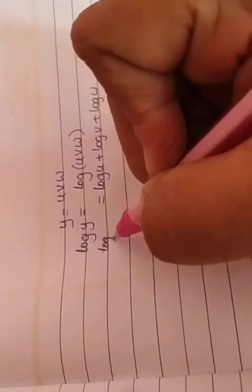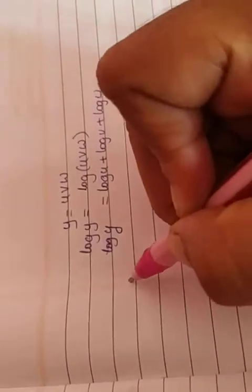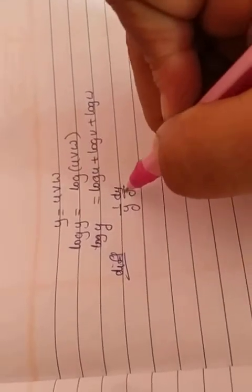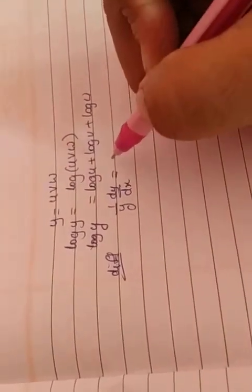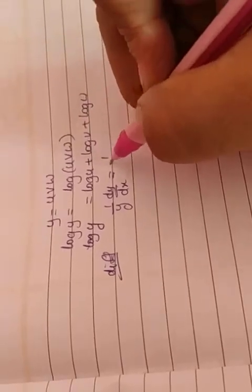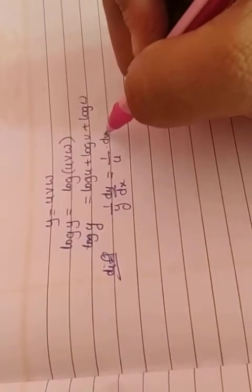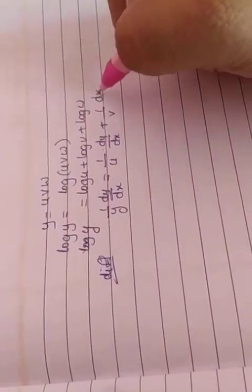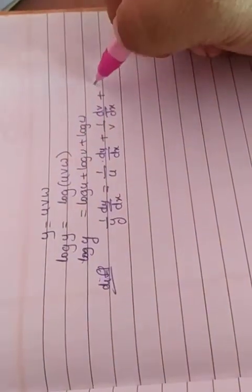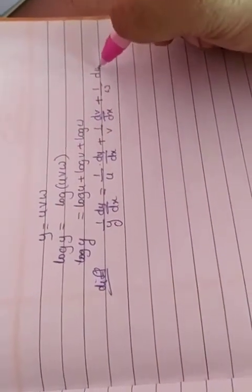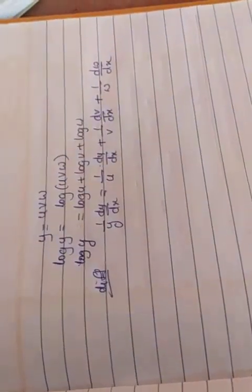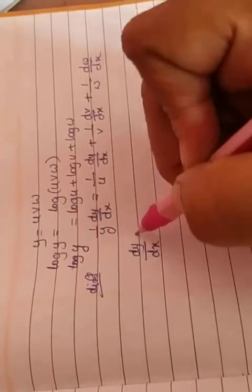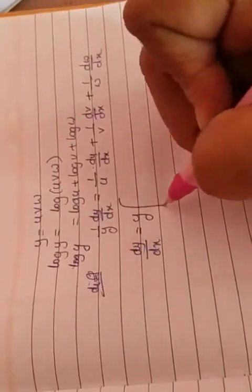Now differentiating both sides — the derivative of log y is 1/y · dy/dx. On the right side, the derivative of log u is 1/u · du/dx, since u is a function of x. Plus the derivative of log v is 1/v · dv/dx. Plus the derivative of log w is 1/w · dw/dx. So, to get dy/dx, we multiply both sides by y.